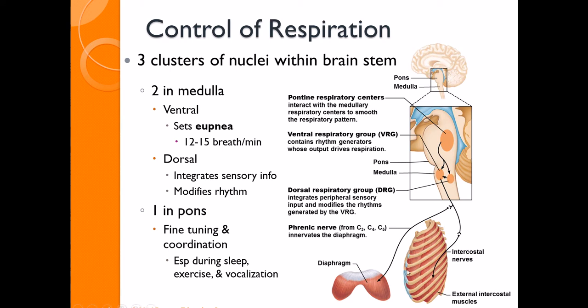The dorsal respiratory group basically modifies that rhythm — it gets information from different sensors and helps coordinate and modify our normal respiratory rhythm. Then the pontine respiratory group is what gives us fine control. When you talk, when you sing, when you exercise, you change your respiratory rate and you need control over that, and that is really coming out of the pontine group in the brainstem.